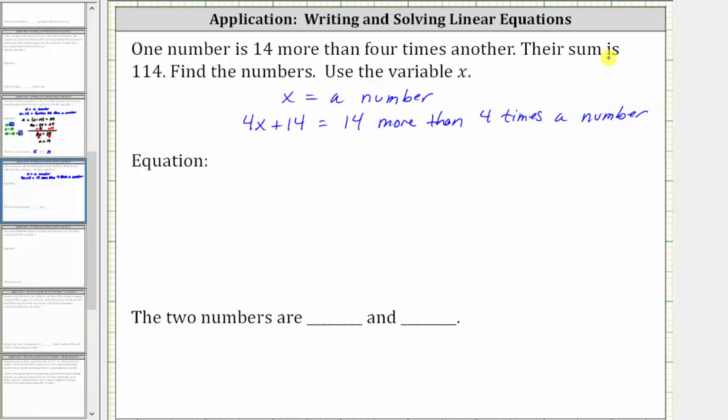And now we know the sum of the two numbers is 114, which means if we add the two numbers, it's equal to 114. This gives us the equation x plus the quantity four x plus 14 equals 114.